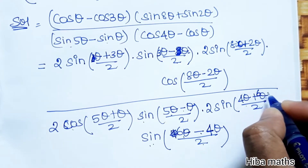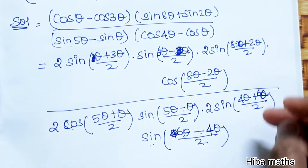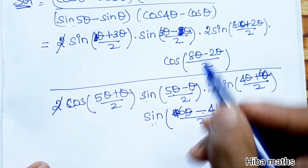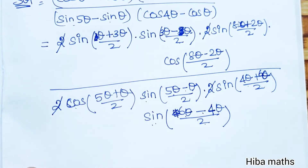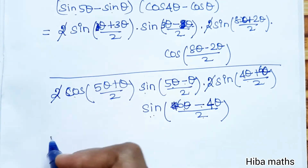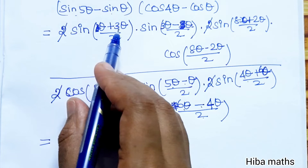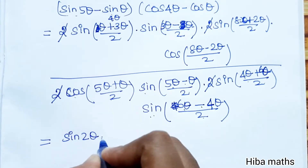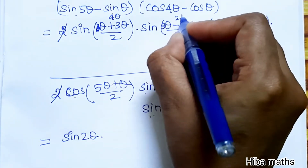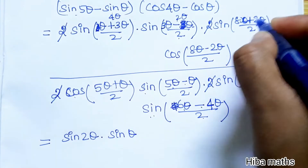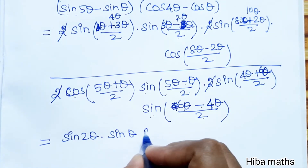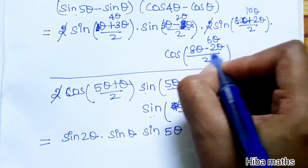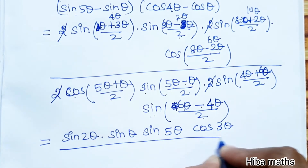Now we solve the numerator and denominator. We cancel the factor of 2. For cos theta minus cos 3 theta: (theta + 3 theta)/2 = 2 theta, and (3 theta - theta)/2 = theta. For sin 8 theta plus sin 2 theta: (8+2)/2 = 5 theta, and (8-2)/2 = 3 theta. For sin 5 theta minus sin theta: (5+1)/2 = 3 theta, and (5-1)/2 = 2 theta. For cos 4 theta minus cos 6 theta: (4+6)/2 = 5 theta, and (6-4)/2 = theta.